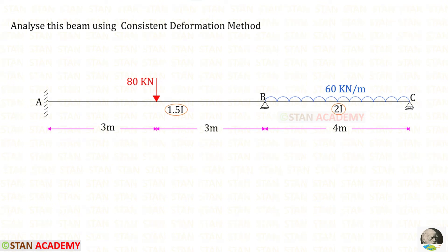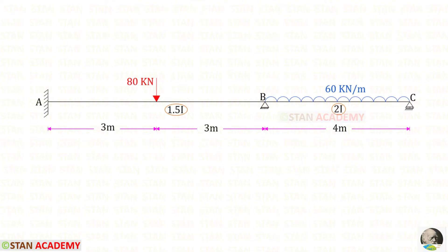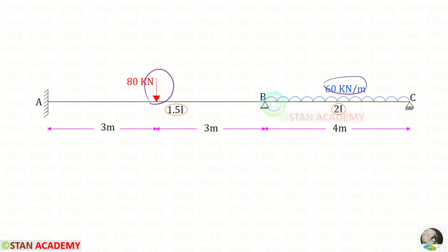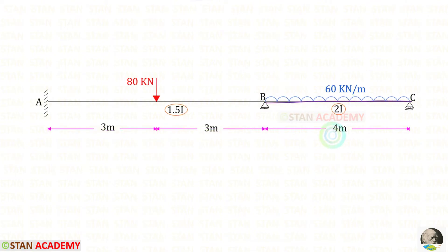Hello everyone. Today we are going to analyze this beam using the consistent deformation method. In this beam there are two spans: span AB and span BC. In span AB there is a point load of 80 kilo Newton at the center. In span BC there is a uniformly distributed load of 60 kilo Newton per meter acting for the whole span. The length of span AB is 6 meters with moment of inertia 1.5I, and the length of span BC is 4 meters with moment of inertia 2I.